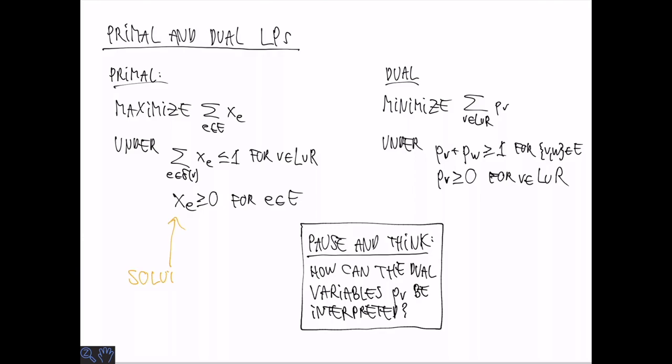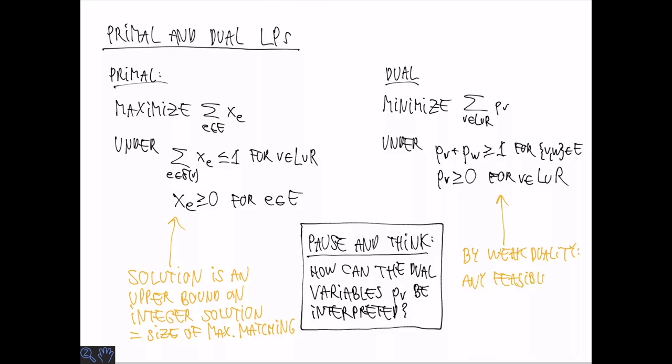Now let's consider what these LPs say about the original problem. Because we have a relaxation, any solution is going to be an upper bound on the integer solution, which is equal to the maximum matching size. By weak duality, the dual has the property that any feasible solution that we come up with, its value is going to be an upper bound on the optimal of the primal, which in turn is an upper bound on the size of the maximum matching. So the idea now is to use feasible solutions to the dual to upper bound opt.